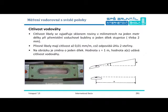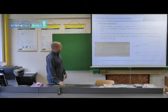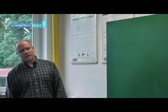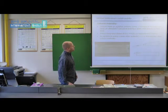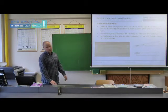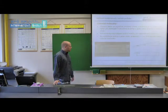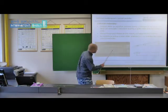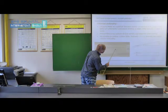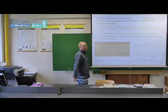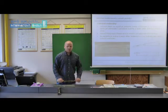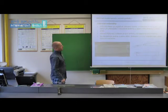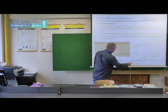The final important point regarding spirit levels is their sensitivity. This slide tells us what the sensitivity of the libel actually is. It's expressed as the slope of the plane in millimeters per one meter of length when the air bubble moves by one division on the scale. This could be, for example, two millimeters. What is this value of two millimeters? One division - the distance between two marks - is one division. Usually this value is two millimeters, but it can certainly be different.